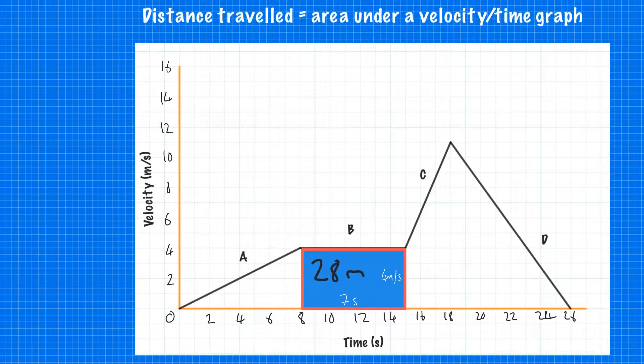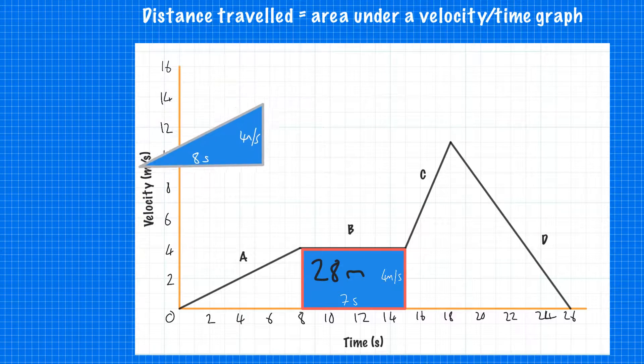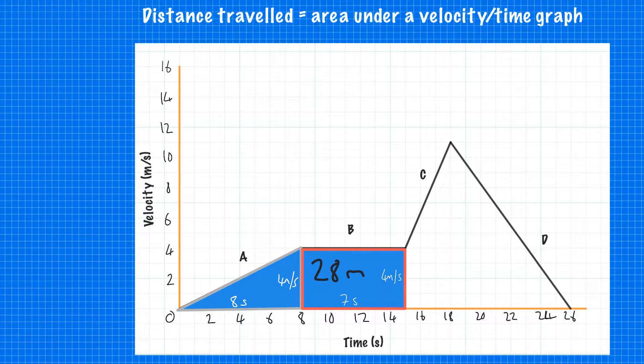For any of the other sections, we have to make it a bit more complicated, but only as complicated as finding the area of a triangle. If we look at section A, we have a triangle. We find the height and the base, but remember the area of a triangle equals half the base times the height.